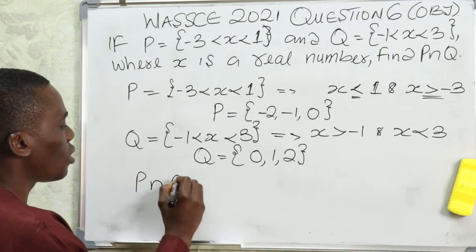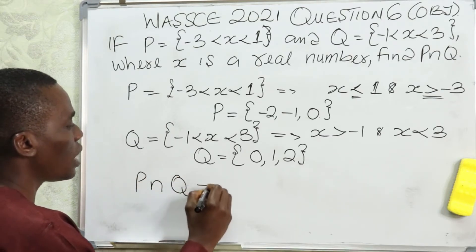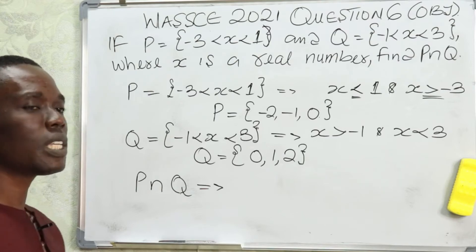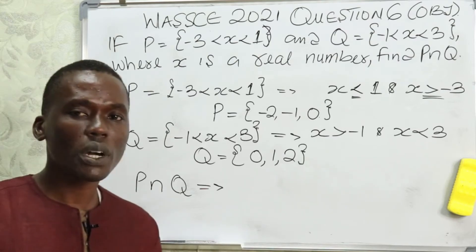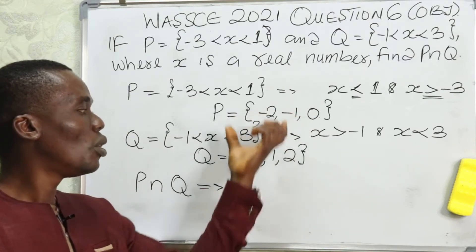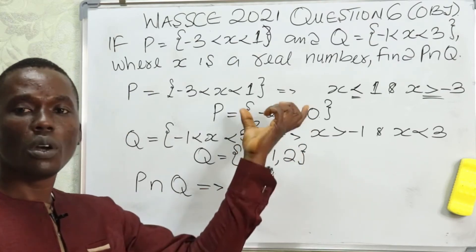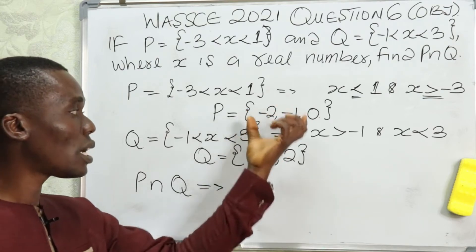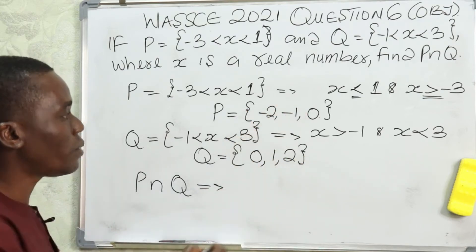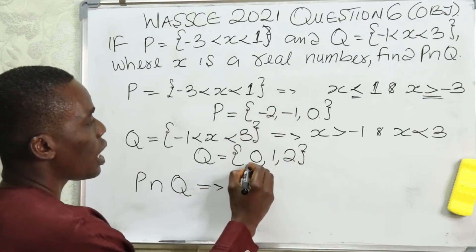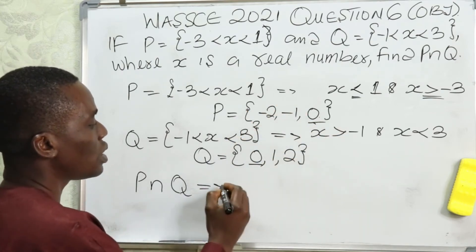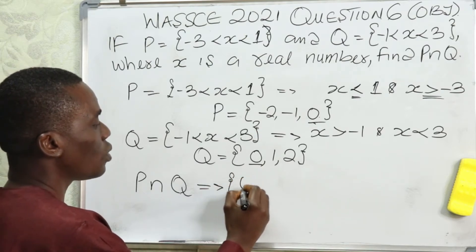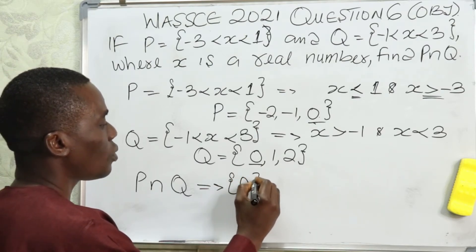Now I want to find P intersect Q. The intersection of a set are numbers that are common to the two sets. Looking at both sets, the number common to both P and Q is zero. So P intersect Q equals zero.